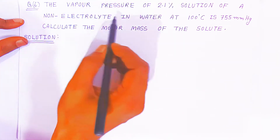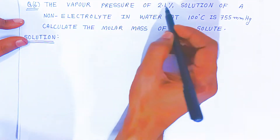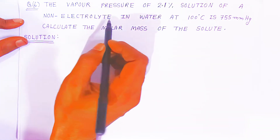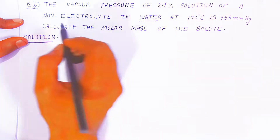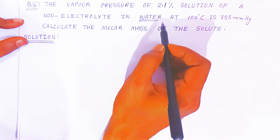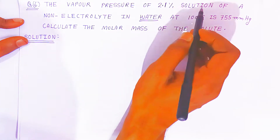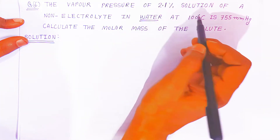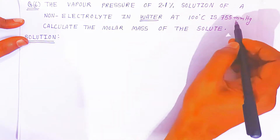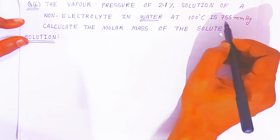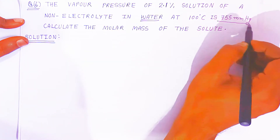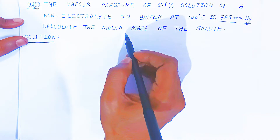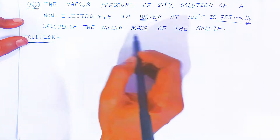In question number six, the vapor pressure of a 2.1 percent solution of a non-electrolyte in water is given. Water is the solvent and a non-electrolyte has been added. At 100 degrees Celsius, the vapor pressure of the solution is given as 755 mmHg. We have to calculate the molar mass of the solute.